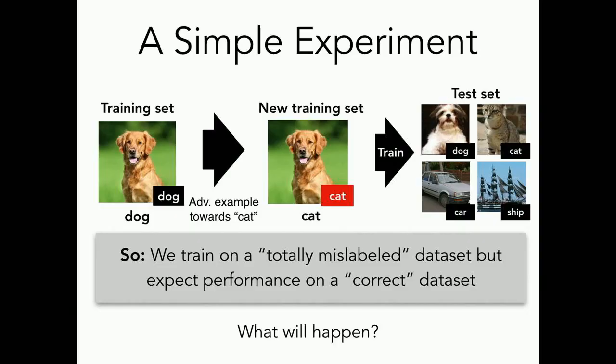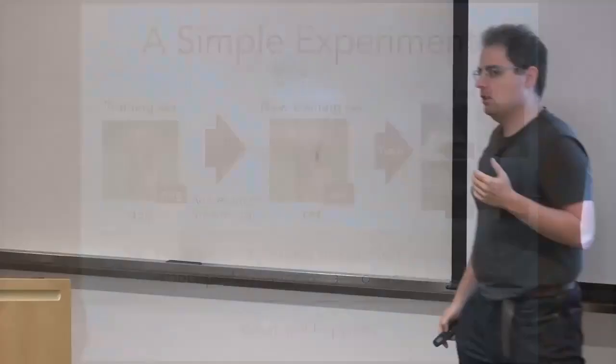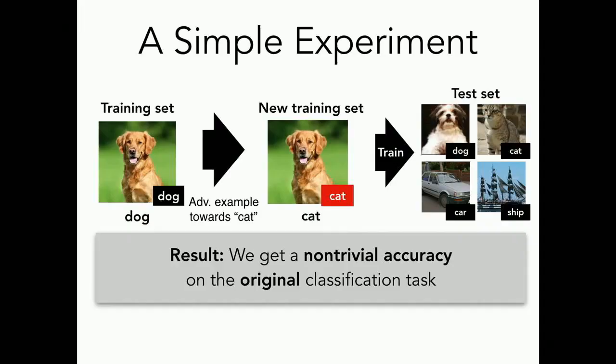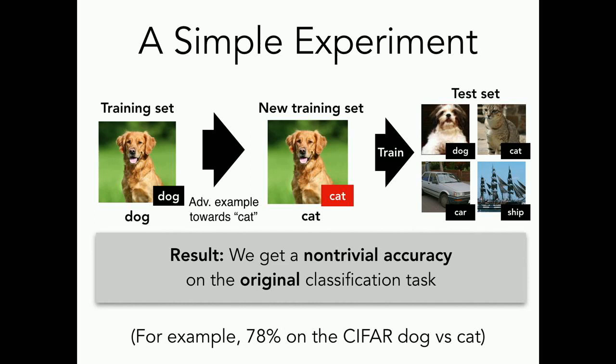The first intuition might be to expect zero percent accuracy — every cat named dog and every dog named cat. But if you actually do this experiment on the CIFAR cats versus dogs question, you will end up with a non-trivial accuracy: around 78 percent, even though you've never shown the model a dog labeled as dog or a cat labeled as cat. So what's going on?